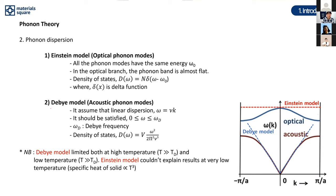The Debye model provides a very good description for acoustic phonon modes, assuming linear dispersion of omega as a function of wave vector k. This linear relationship is a good approximation for the acoustic branch. The Debye model can also be used to calculate the density of states. However, both the Debye and Einstein models have some limitations at very high or very low frequencies.